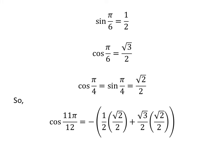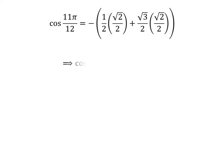We get, cosine of 11 times pi upon 12 is equal to minus of one half times square root of 2 upon 2 plus square root of 3 upon 2 times square root of 2 upon 2. Straight multiplication gives us cosine of 11 times pi upon 12 is equal to minus of square root of 2 upon 4 plus square root of 6 upon 4.